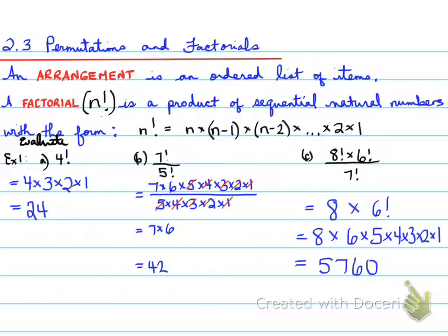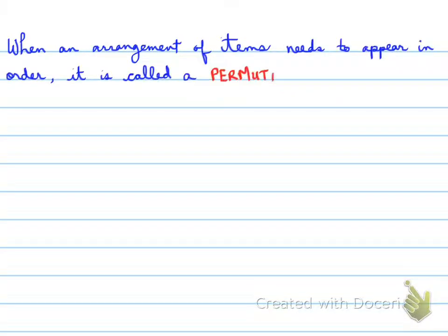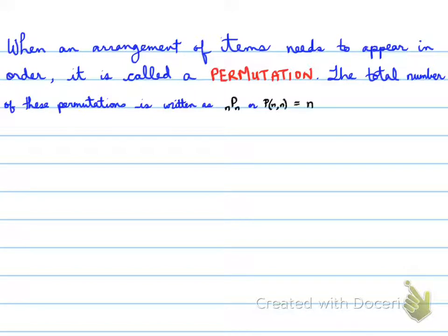This should be pretty straightforward. Moving forward. When an arrangement of items needs to appear in order, it is called a permutation. The total number of these permutations is written as NPN, or PNN, which equals N factorial.